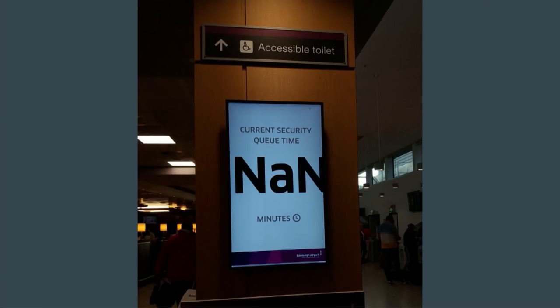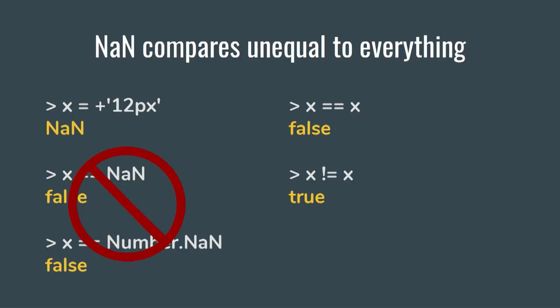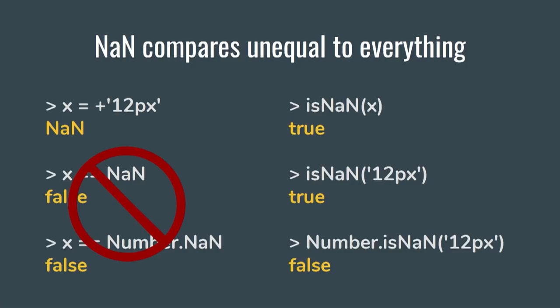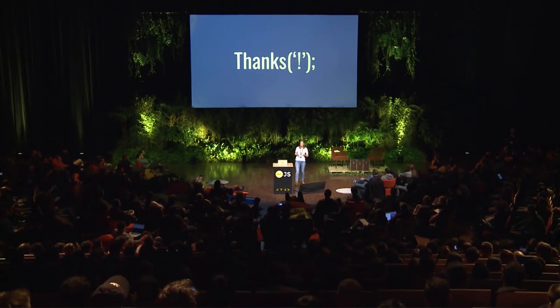The last thing I want to talk about is NaN. There is usual confusion around NaN — to know if something is NaN. In fact, NaN compares unequal to everything, which means there is no sense comparing it to the constant NaN; you will always get a false result. Instead, you can compare it to itself, since it's the only value in JavaScript which compares unequal to itself. Or you could use the standard isNaN or Number.isNaN methods — but be sure there is a slight difference between them. The global isNaN will cast the value to a number before performing the check. I hope everyone found something new. Thank you.